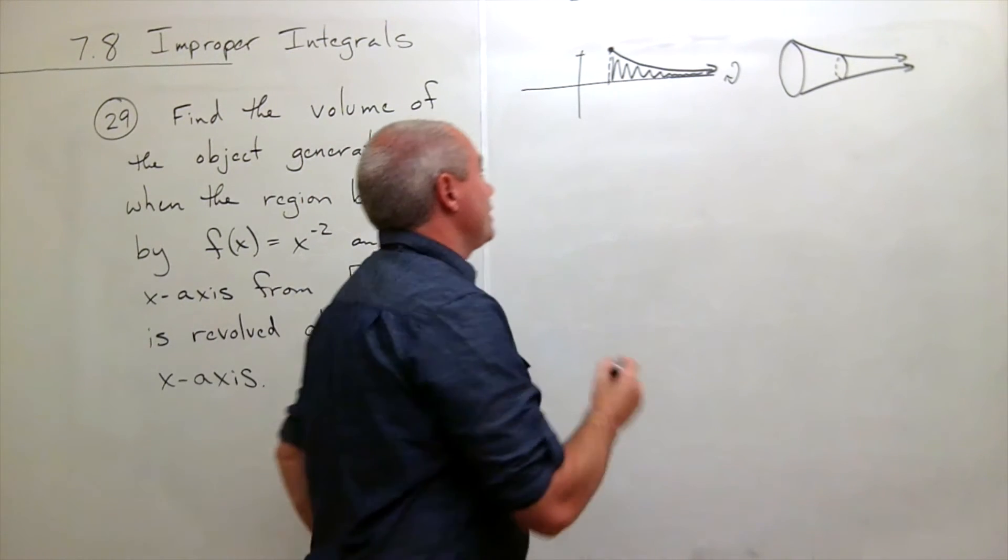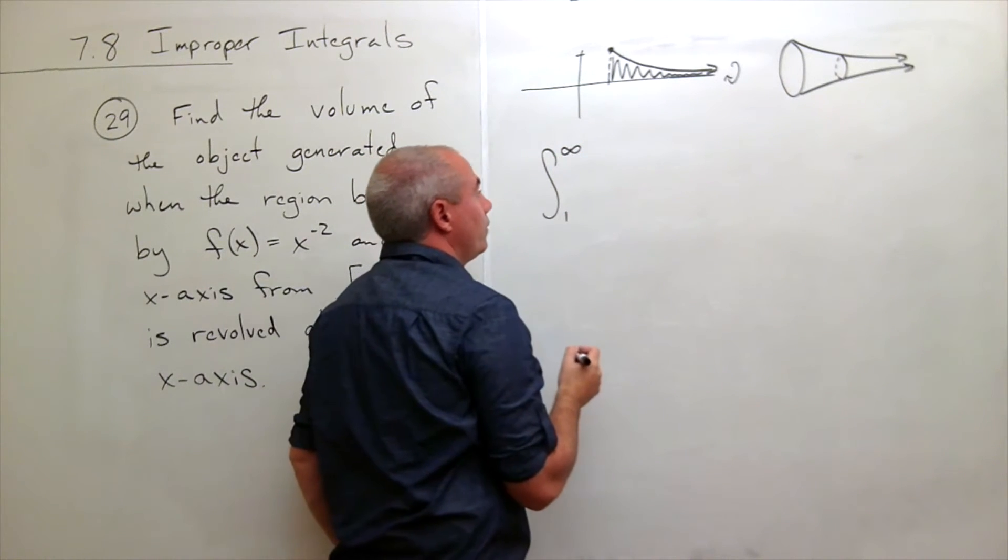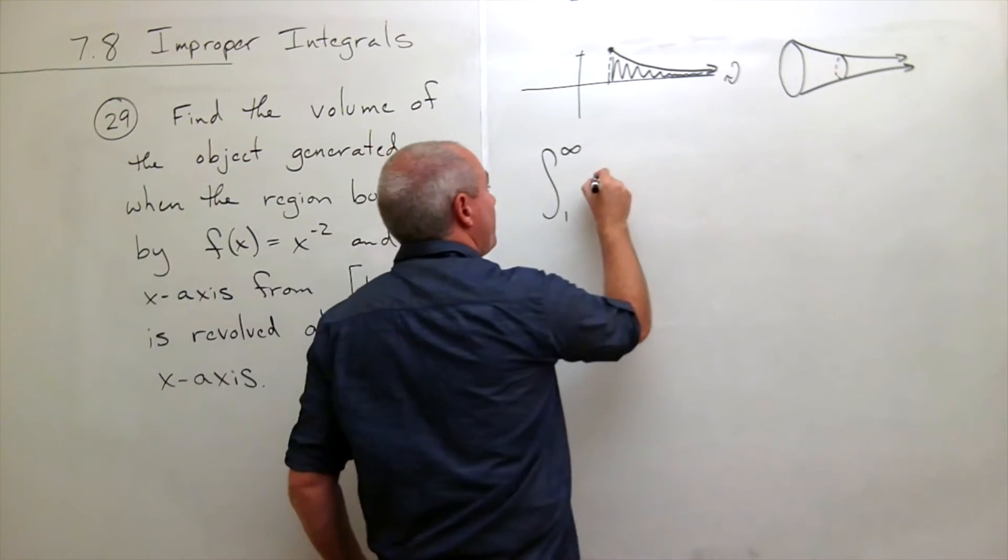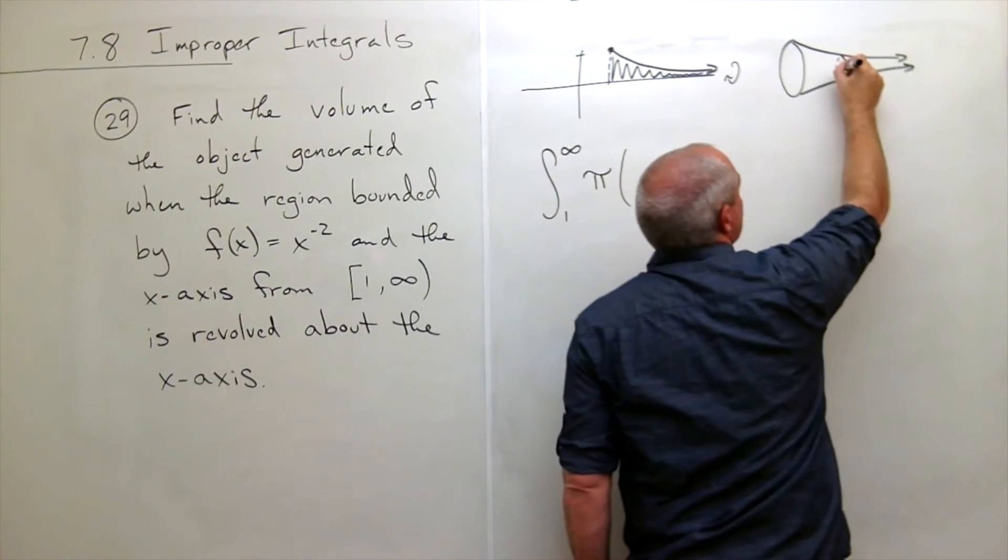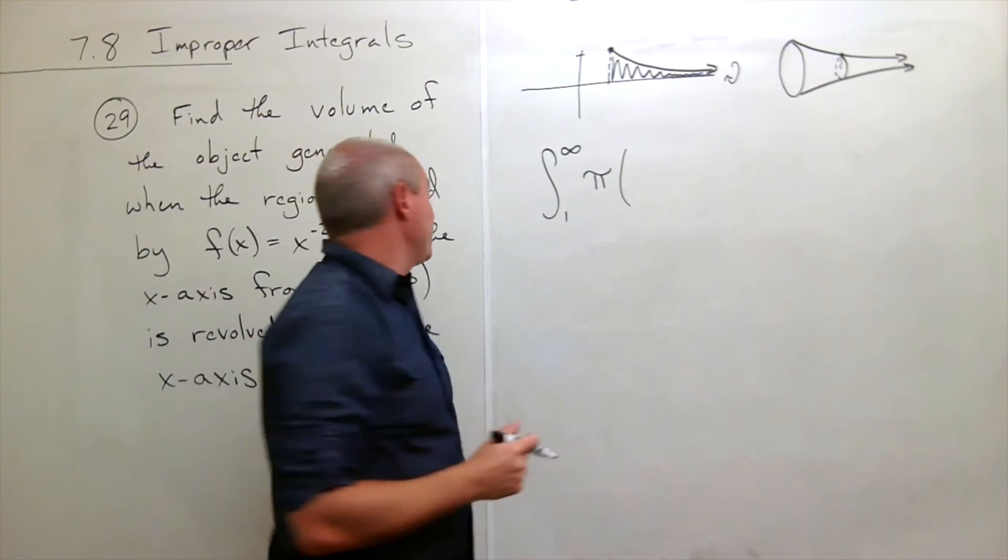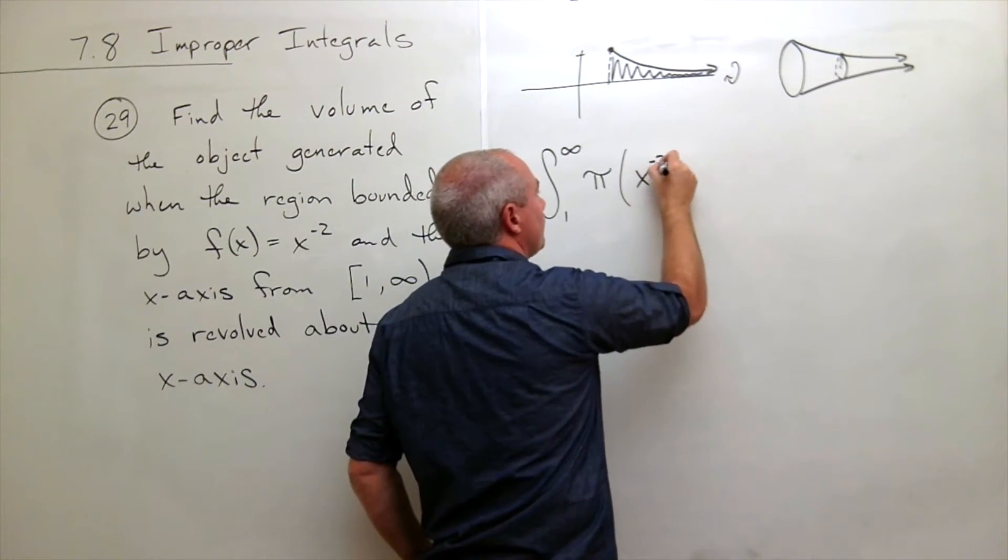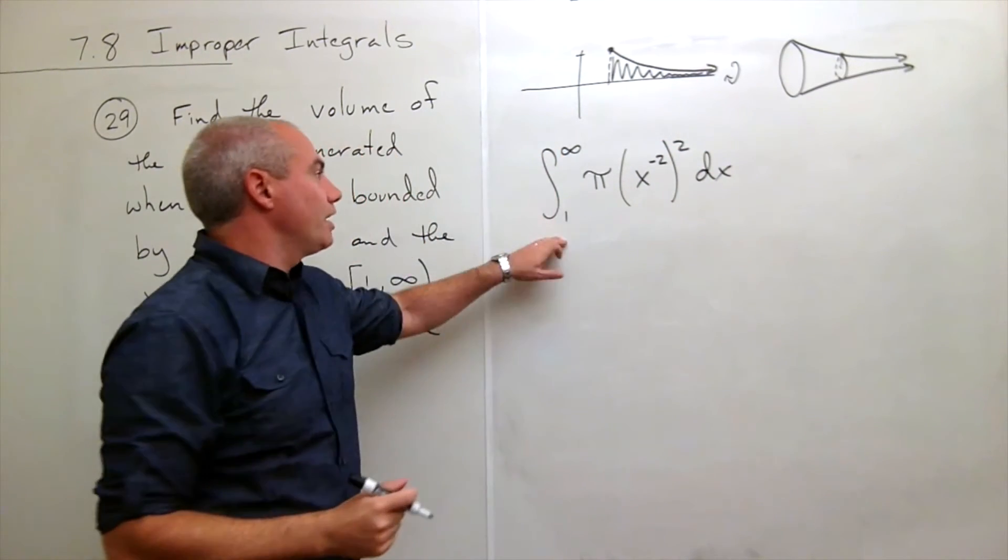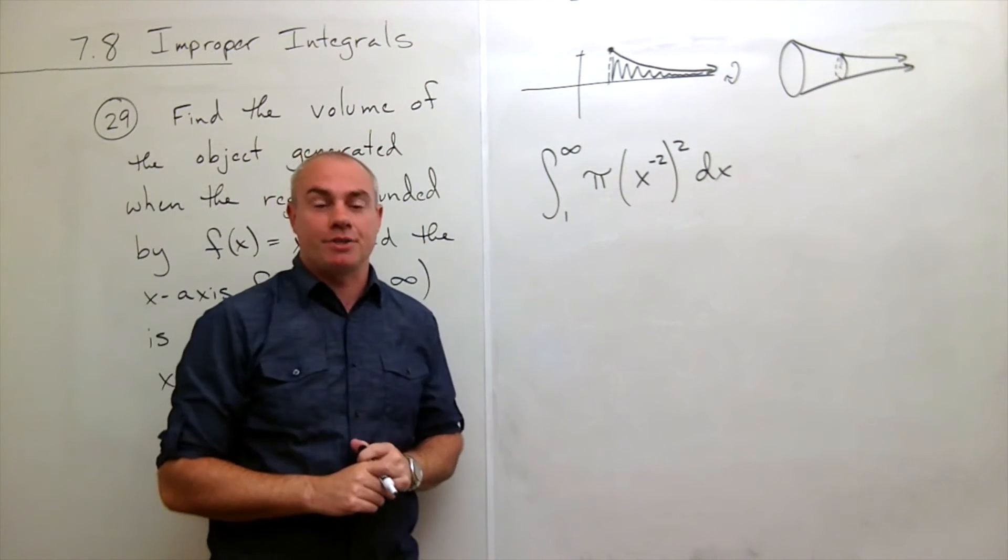So if I wanted to integrate this, I'm integrating from 1 to infinity. Well, it's the disk method, so I use pi r squared. So it's pi times the radius, but in this case the radius of this disk is just the functional value. The functional value is x to the negative 2. So I get x to the negative 2 squared dx. So I have integral of pi r squared dx. And we're set up to go.